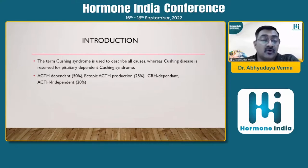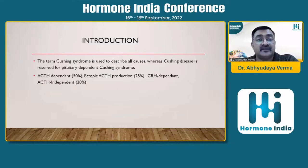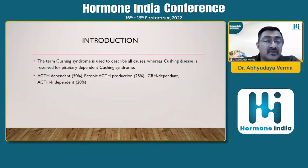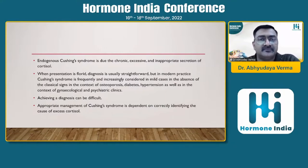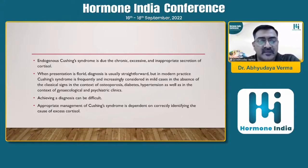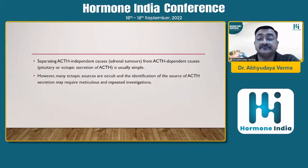We should all know that Cushing's syndrome is basically ACTH dependent in more than 50% of cases, ectopic ACTH production in 25%, CRH dependent and ACTH independent in about 20% of patients. As Dr. Sachin has pointed out very well, it becomes sometimes really confusing and difficult to diagnose cases of ACTH dependent pituitary adenoma or ectopic ACTH dependent Cushing's disease. Many ectopic sources are occult and identification of the source of secretion may require meticulous and repeated investigation.